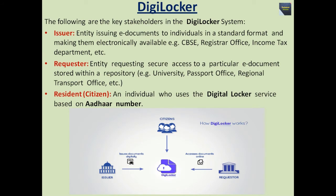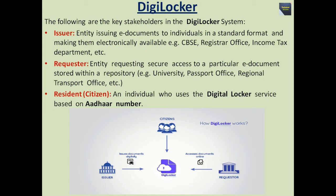The key stakeholders in the DigiLocker system are the issuer, requester, and resident — meaning the citizen. The issuer is an entity issuing e-documents to individuals in a standard format and making them electronically available; examples include CBSE, registered offices, and the income tax department. The requester is an entity requesting secure access to a particular e-document stored within a repository; examples include universities, passport offices, and regional transport offices. The resident or citizen is an individual who uses the digital locker service based on their Aadhaar number. The following diagram shows how DigiLocker works.